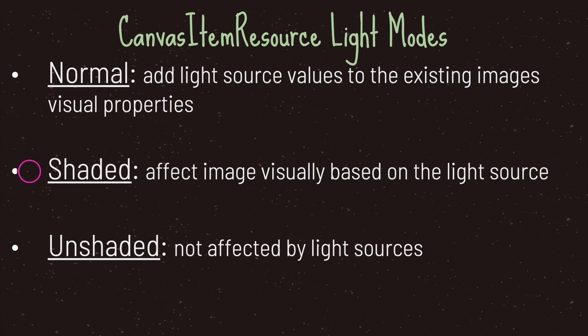Unlike normal, where you will still show your image even without a light source, with shaded set as your light mode option your image may in fact disappear if it is not close to or being affected by a light — in this case a Light2D node. The last option is unshaded, and with this option set your image will not be affected by any light source.